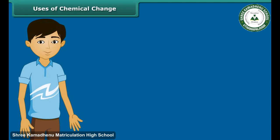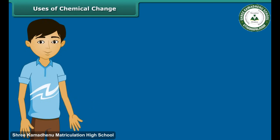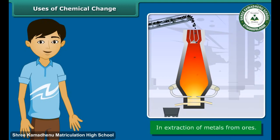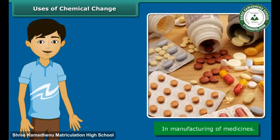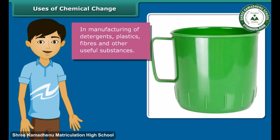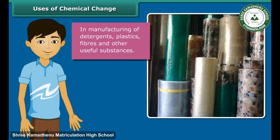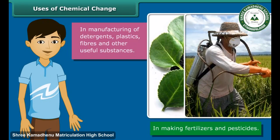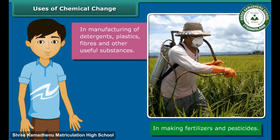Do you know the importance of chemical changes in our life? They are useful in extracting metals from ores, manufacturing medicines, and producing artificial and useful substances like detergents, plastics, fibers, fertilizers, and pesticides for agriculture purposes.